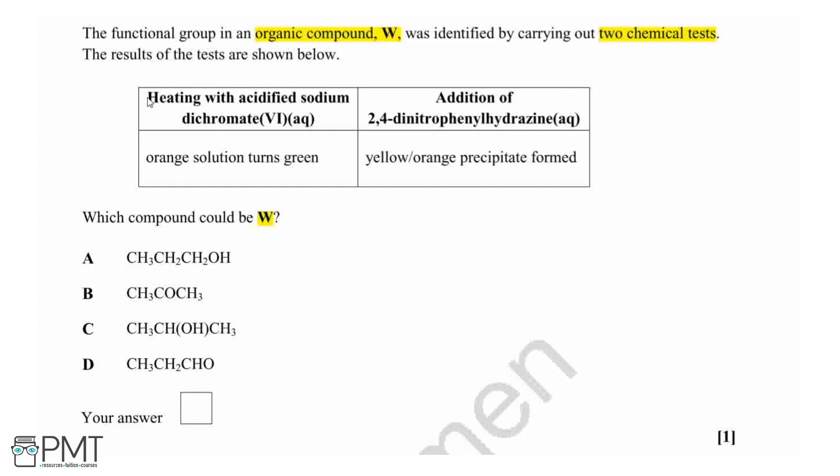Our first one is heating with acidified sodium dichromate. This is an oxidizing agent which can be used to oxidize primary and secondary alcohols or aldehydes.